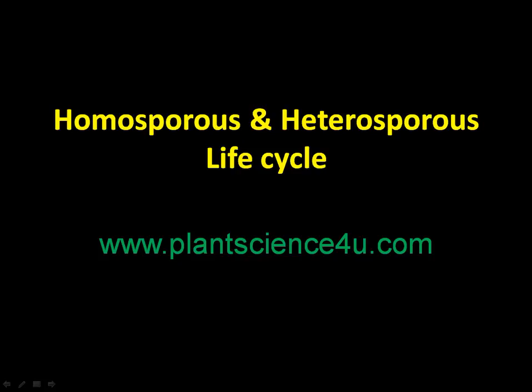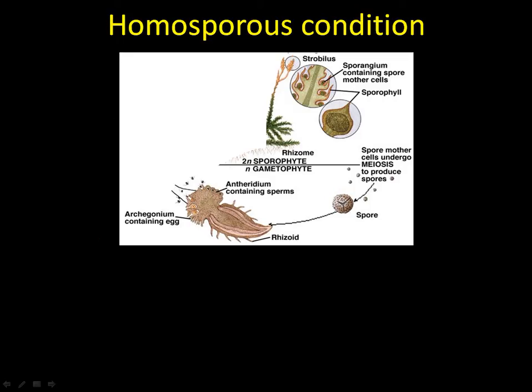Welcome to plantscience4u.com. In this presentation we are going to discuss the difference between homosporous and heterosporous life cycles. In the homosporous condition, as the term indicates, that particular plant produces a single type of spore, and that spore gives rise to a gametophyte that contains a male reproductive structure.